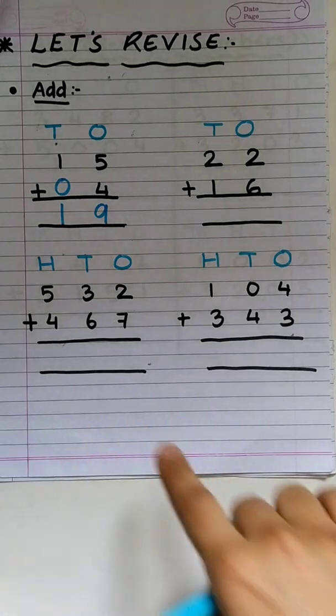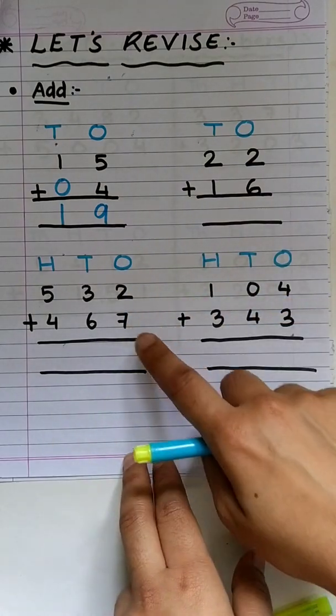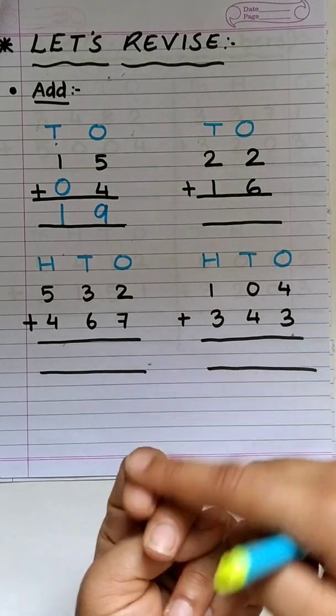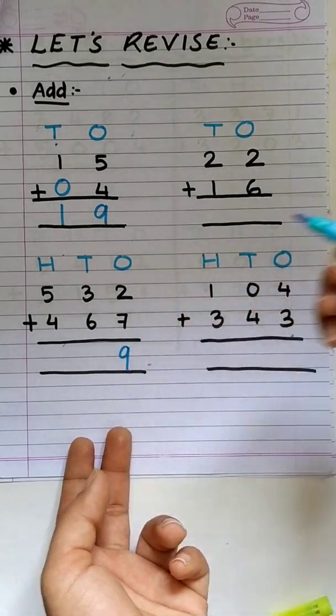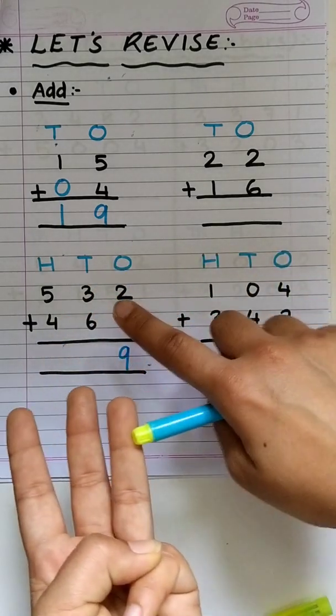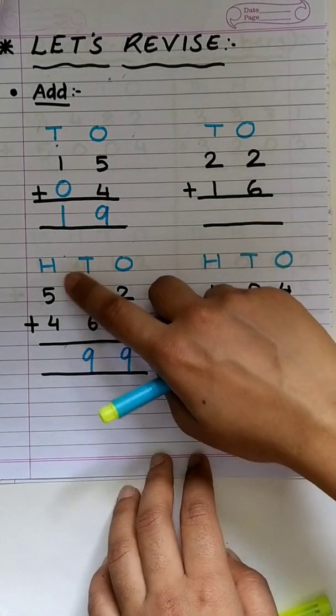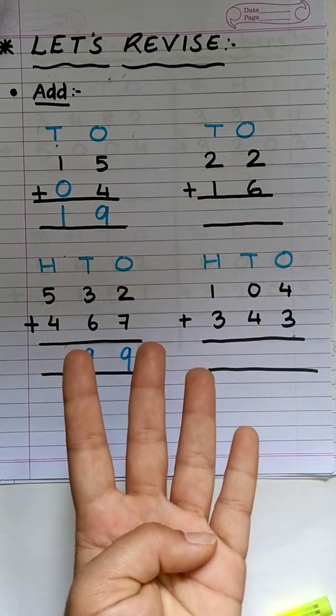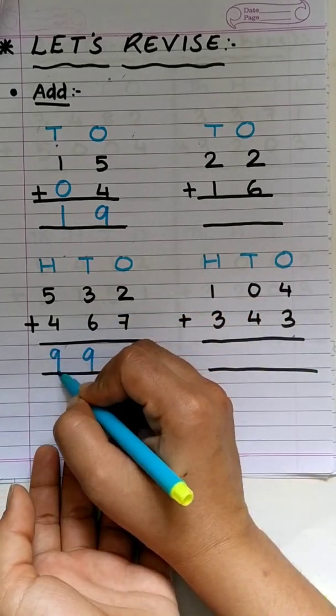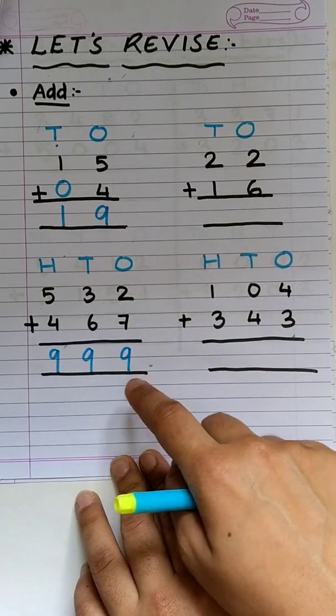Great! Now, let's solve this one. We will start with digits at 1's place. Bigger number on mind, smaller on finger. After 7: 8, 9. So, we will write 9 over here. Again, bigger digit on mind, smaller on finger. After 6: 7, 8, 9. So, we will write 9 again. Bigger number on mind, smaller on finger. After 5: 6, 7, 8, 9. So, we will write 9 again. So, 532 plus 467 is 999. Easy.